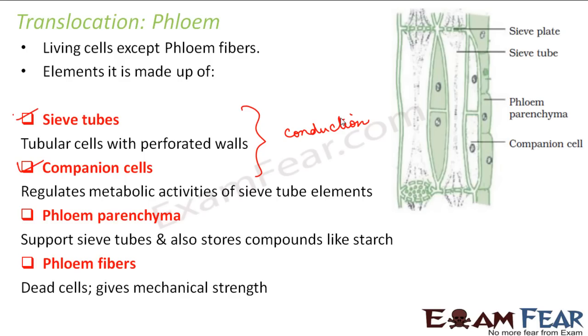Phloem conducts the food which is prepared during photosynthesis and is stored in leaves. It also conducts some other important substances like hormones and amino acids which are needed by the plants.